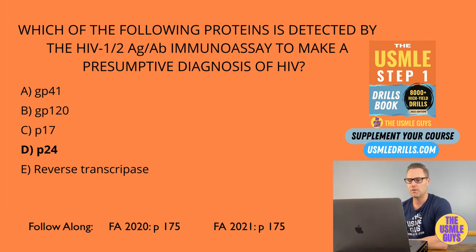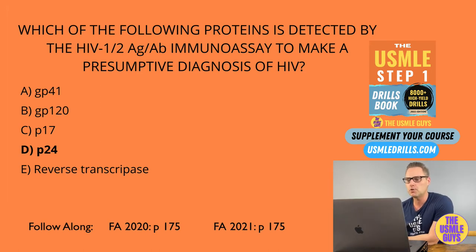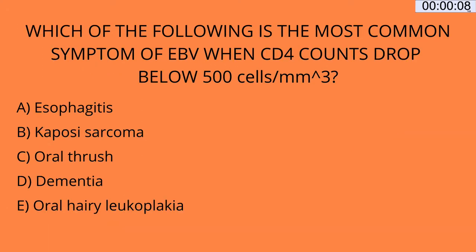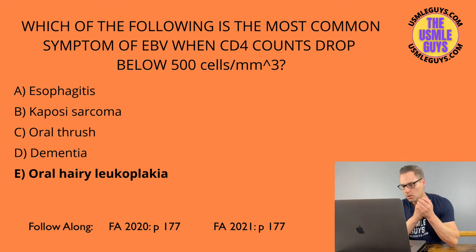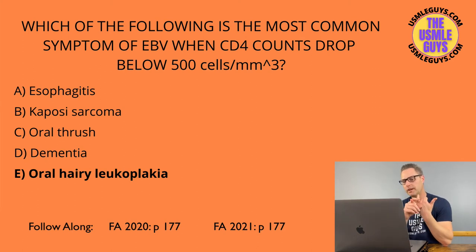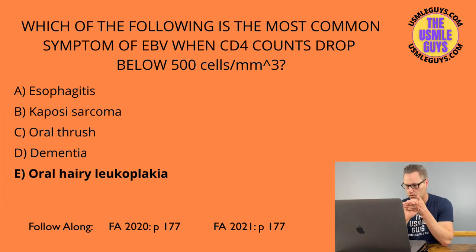Make sure you always do up-to-date questions. The correct answer to the next question is E. Once the CD4 count drops below 500, we start to really worry about the patient and possible consequences. At this point, our major concerns are Candida albicans, EBV, HHV-8, and HPV.